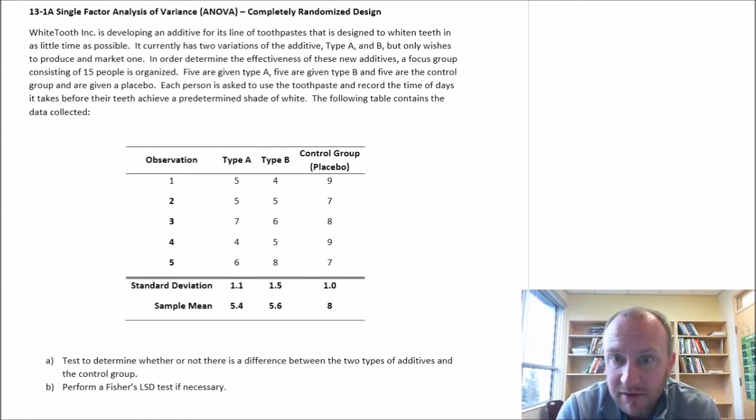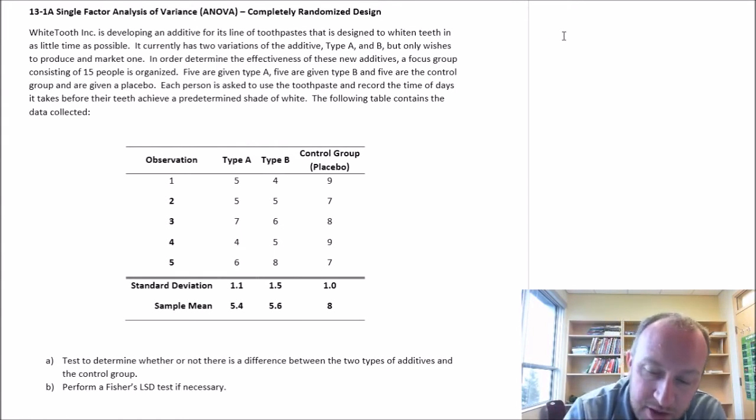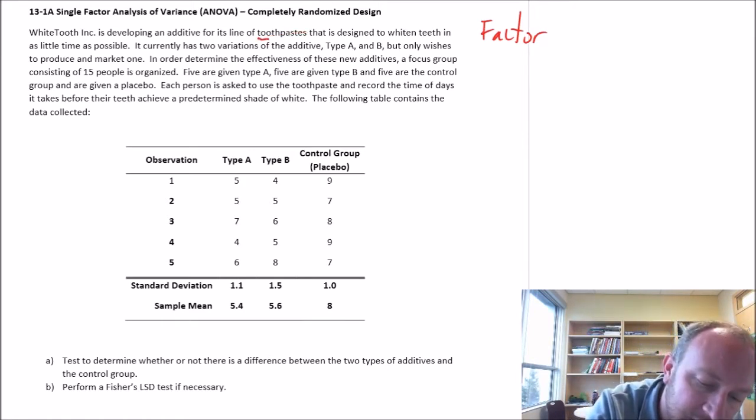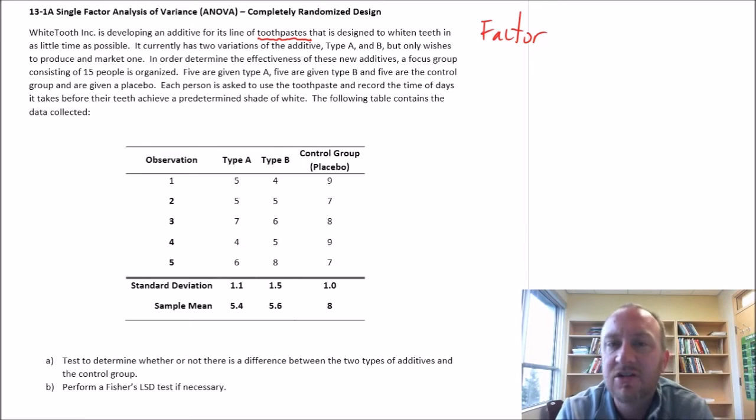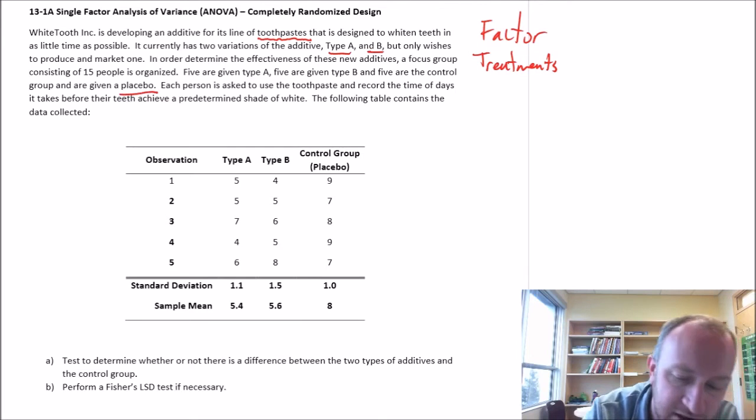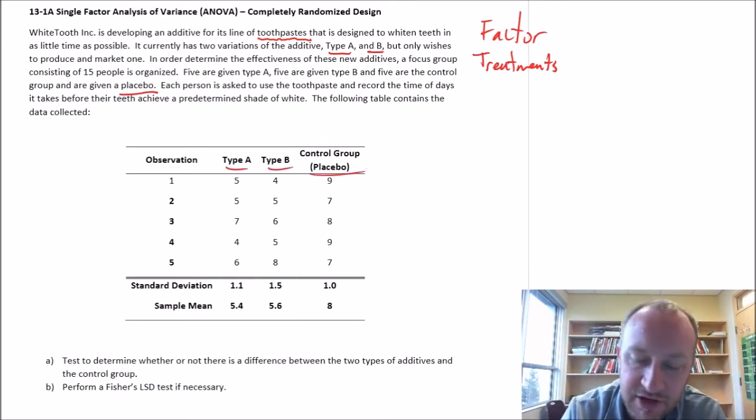So probably just plain toothpaste without any additive in it. Each person is asked to use the toothpaste and record the time in days it takes before their teeth achieve a predetermined shade of white. Before we go through the exercise, let's identify the different components of this experiment. When we talk about what is our factor, our factor of investigation, here our factor is really just the toothpaste. We're studying toothpaste as the factor.